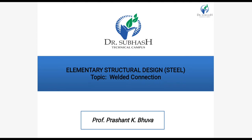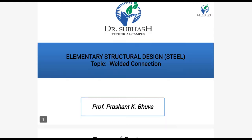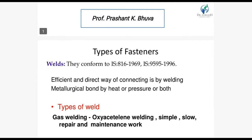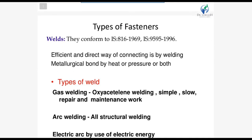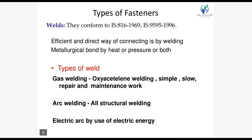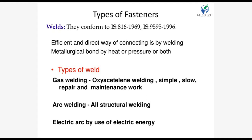A temperature of about 3300 to 5000 degrees Celsius is produced in the arc. The various processes of welding will be discussed in today's video. The welds are governed by IS 816:1969 and IS 9595:1996.